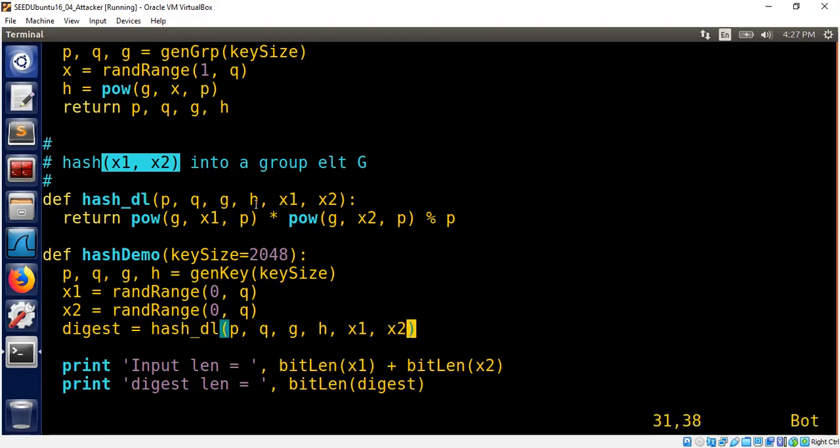So in practice, even if you're going to use this, p, q, g, h are fixed. x1 and x2 is the input that will change, that you will call for multiple inputs to figure out different hash functions, different hash values.